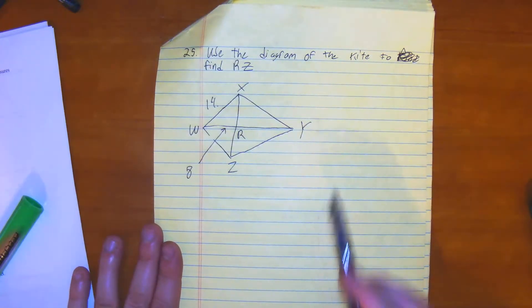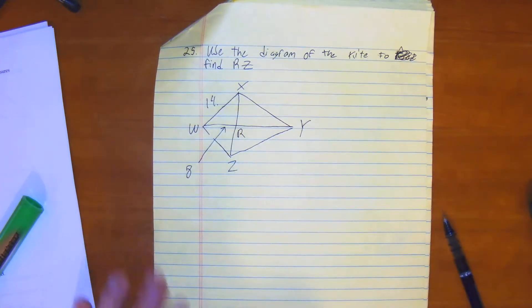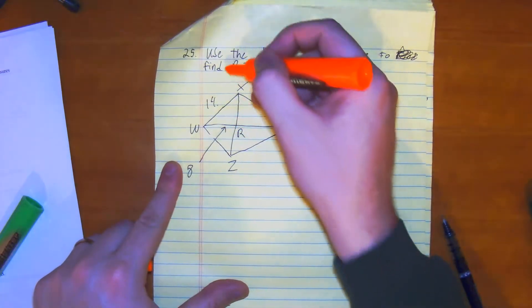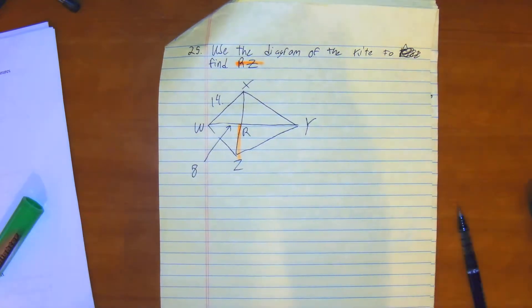We want to use the diagram of the kite to find the value of RZ. So first, the way we want to look at it is highlight RZ. We want to make sure we know what we're solving for.